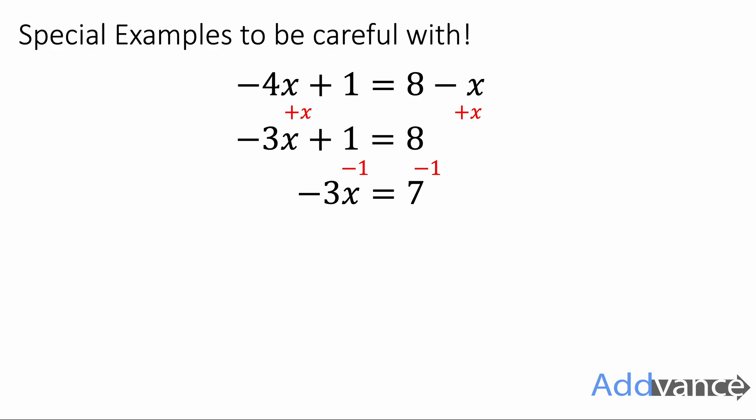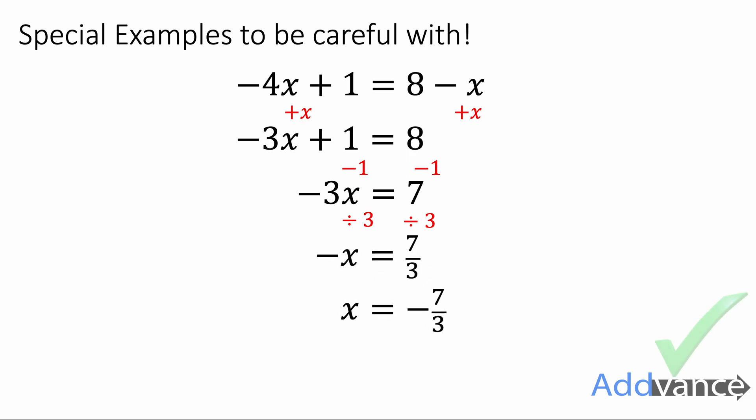Now we're going to get rid of the times by 3 — it says minus 3 times x — so we divide by 3 on both sides. We get minus x equals 7 divided by 3, which we write as the fraction 7 thirds. Notice the negative sign on the left hand side has not moved: minus 3x divided by 3 is just minus x. We have to get rid of that minus x, so we swap the signs of everything and we get x equals minus 7 thirds. We only have the final answer when it's x equals, not minus x equals, so the minus sign moves to the other side giving minus 7 thirds as the final answer.